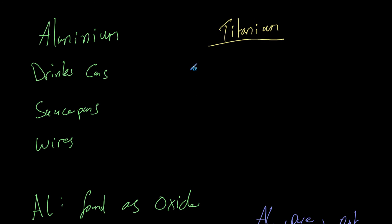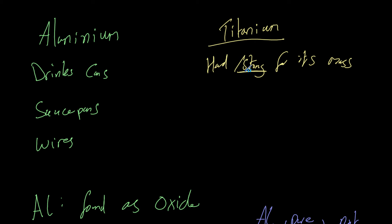Next we have titanium. Titanium is another metal which is very hard and strong for its mass. Both aluminium and titanium are used so much because their density is quite low, so their mass given a certain volume is fairly low. Titanium is denser than aluminium — aluminium is very light, not very dense — but on the flip side, titanium is a stronger metal than aluminium and has a higher melting point. So we use it for things which require such characteristics.